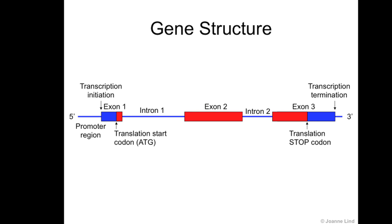This animation is about the structure of a gene. If you have a look at the image here, you will see that a gene is made up of DNA, in which we can group into exons, which are the expressed regions of the gene, and introns, which I like to think of as the in-between exon regions of the gene.